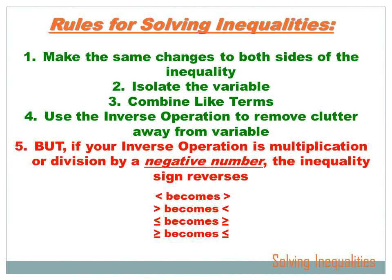How would we solve an inequality? It's pretty much the same as solving an equation, and it follows pretty much the same rules with one big exception. The rules for solving an inequality include: number one, make the same changes to both sides of the inequality. Number two, isolate the variable — try to get everything on the other side so you leave only the variable on one side. Number three, combine like terms — if you've got 2x plus 3x, combine it to 5x.